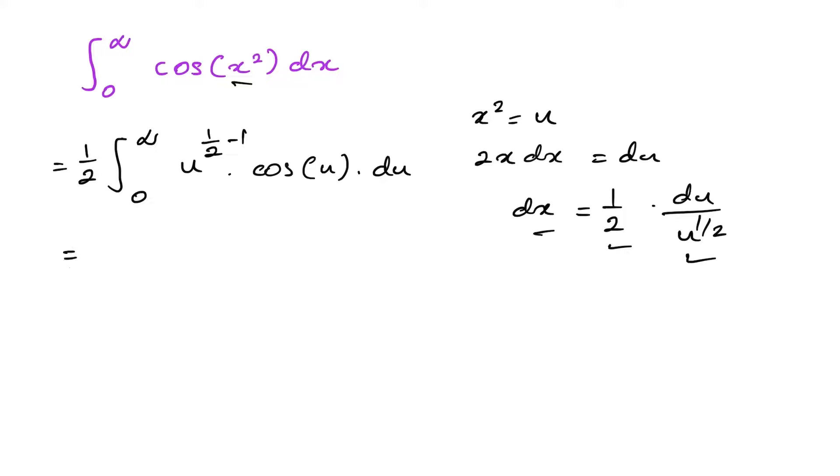Okay, now we are almost done. Because here we have one-half, this integral is very easy for us. Because we know this one is gamma of one-half times cosine of pi over four.